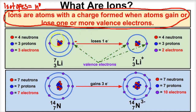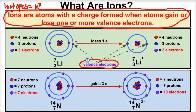Let's take a look at a couple of examples. Here we have a lithium-7 atom — it has three protons and four neutrons inside its nucleus, and three electrons outside: two in the first energy level and one in the outer energy level. The electrons in the outermost energy level are called valence electrons, so lithium has one valence electron.